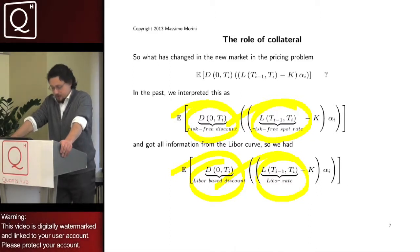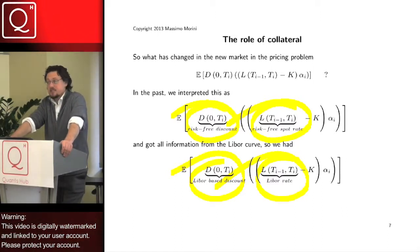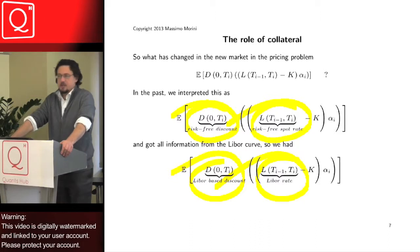Now notice, is discounting still a risk-free discounting? Well, the point is that the answer is yes, because in the market approximation, forward rate agreements being collateralized are treated as risk-free. So, discounting is still a risk-free discounting.